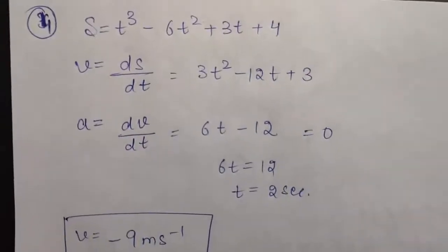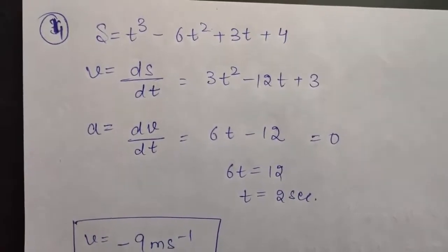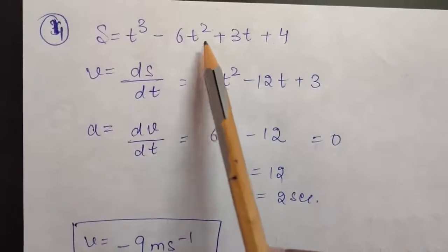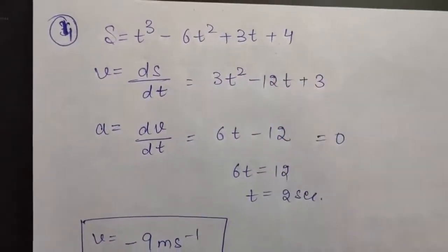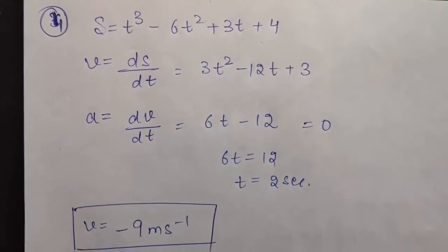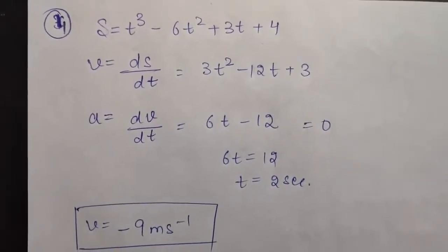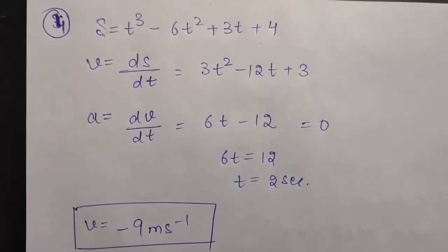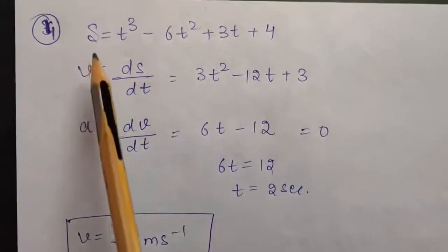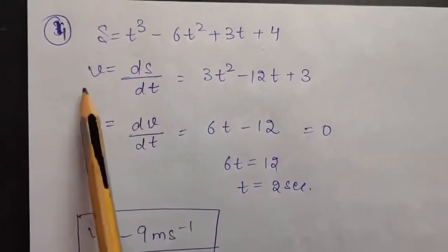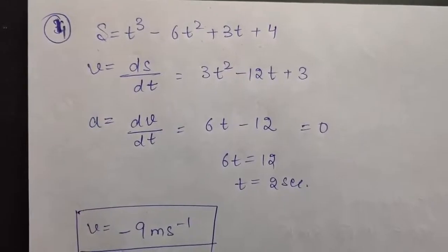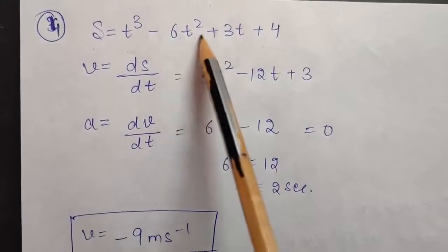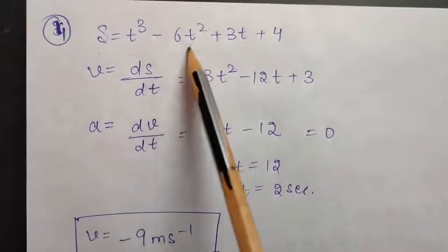In question number 4, you are given an equation of distance depending on time: s = t³ − 6t² + 3t + 4. You have to calculate the velocity at which the acceleration becomes 0. By doing differentiation of distance with respect to time, we will first calculate velocity. When you differentiate it, differentiation of t³ will be 3t², and differentiation of 6t² will be minus 12t.